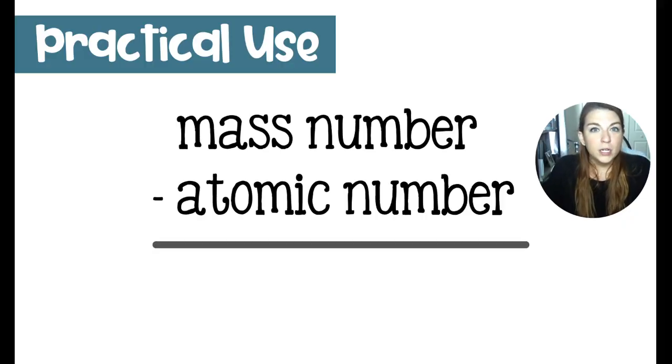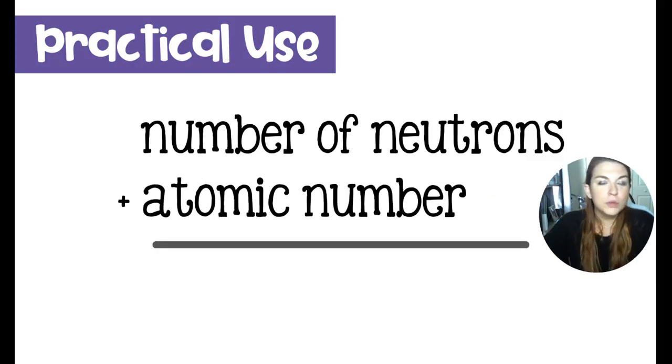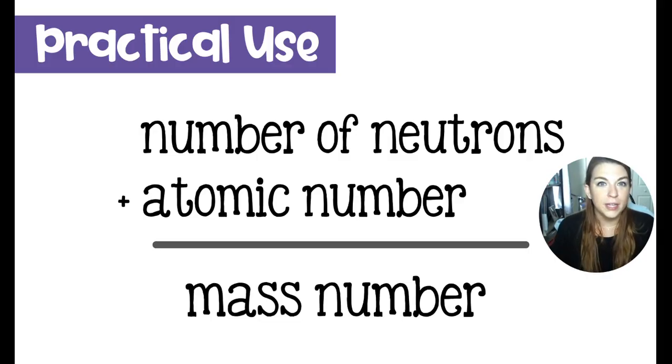The mass number minus the atomic number gives us the number of neutrons in a nucleus. The reverse is also true. If you had the number of neutrons and the atomic number and added that together, you could get the mass number.